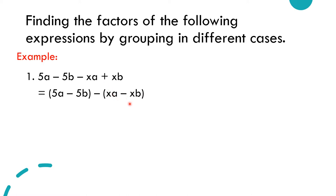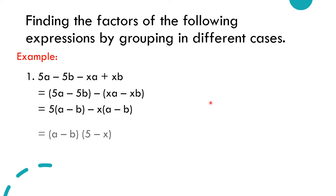After grouping, we take out the common factor. For the first group (5a minus 5b), the common factor is 5, giving 5(a minus b). For the second group (xa minus xb), the common factor is x, giving x(a minus b). Now the common factor of the whole expression is (a minus b), so we extract it: (a minus b)(5 minus x). Therefore, the factored form of 5a minus 5b minus xa plus xb is (a minus b)(5 minus x).